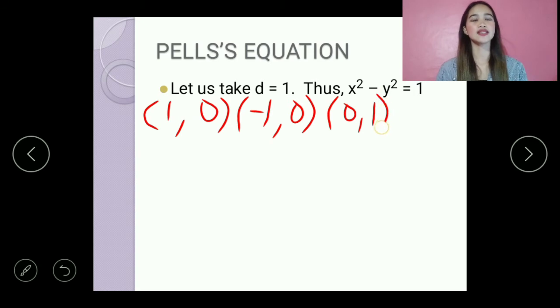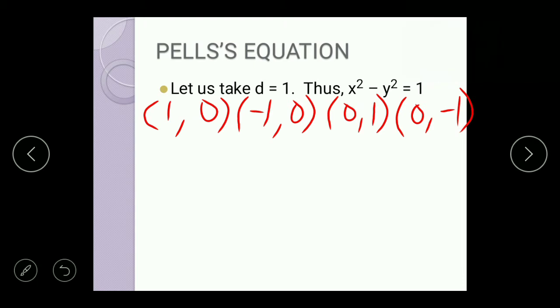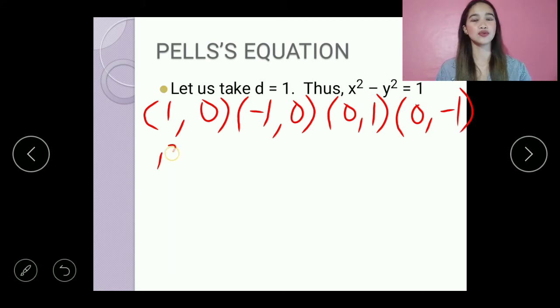So 1 raised to 2 minus 0 raised to 2 is equal to 1. Negative 1 raised to 2 minus 0 raised to 2 is equal to 1.